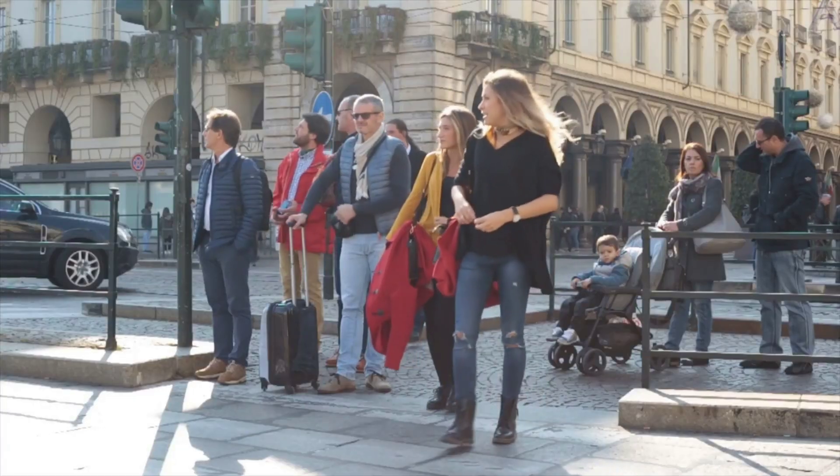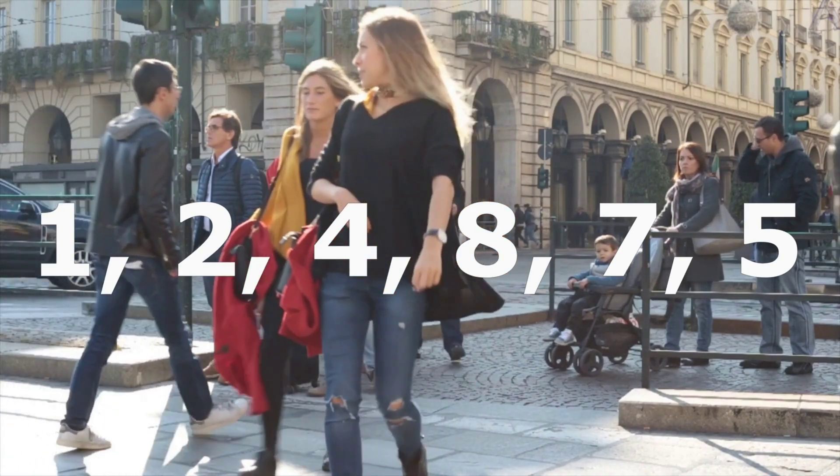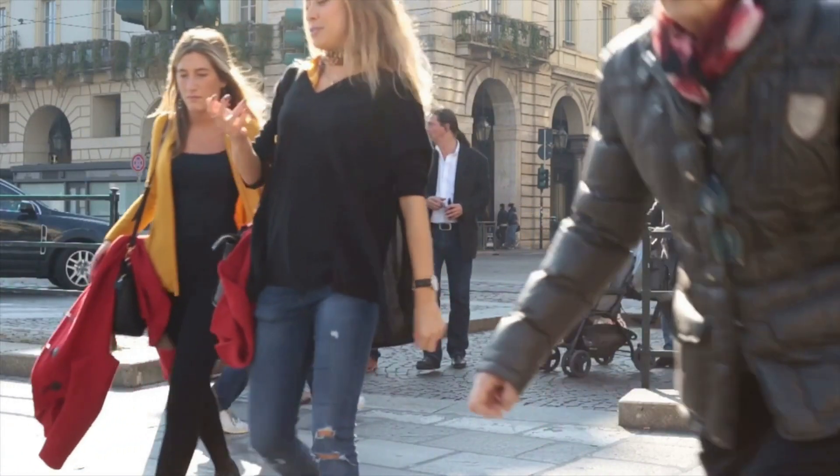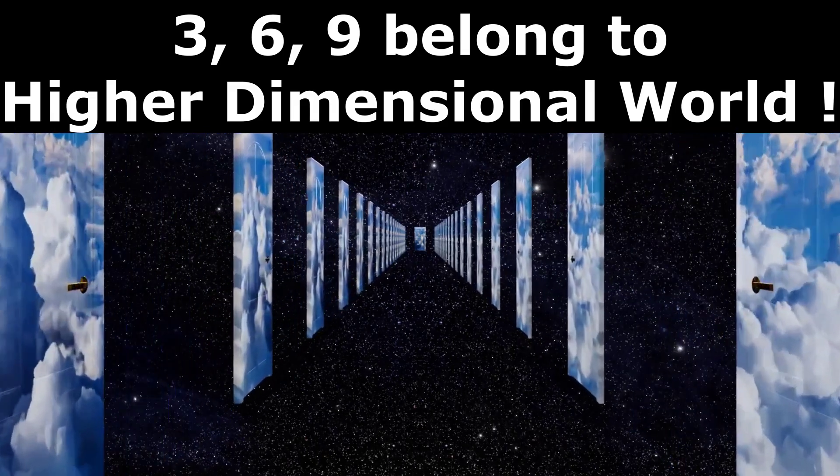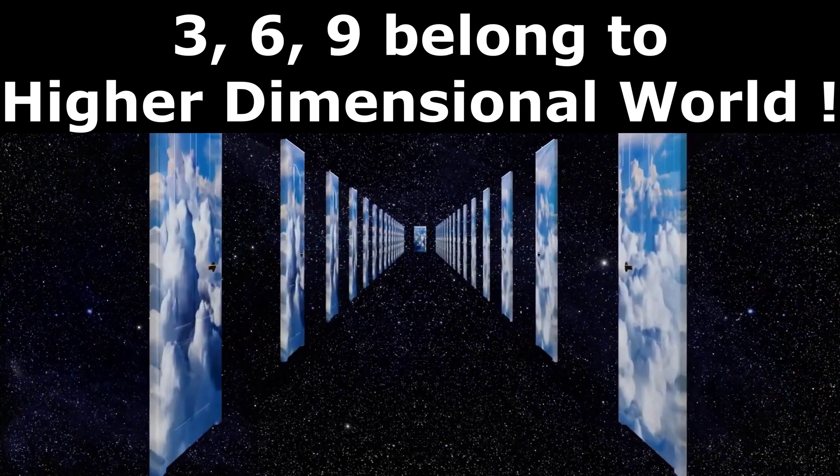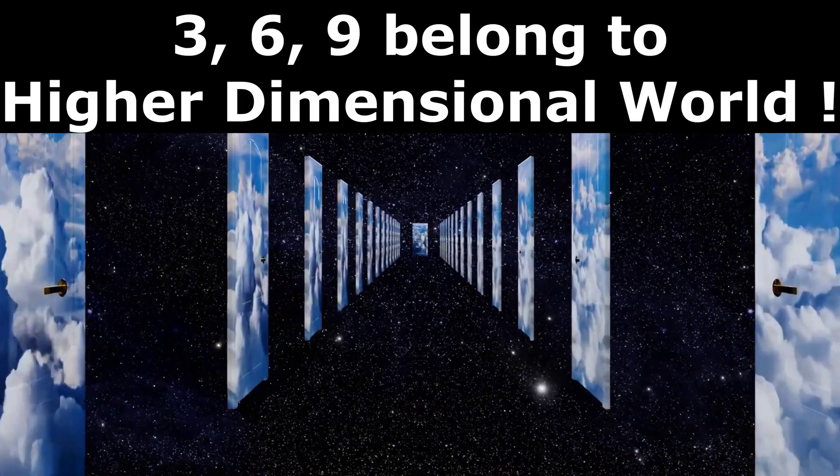According to some researchers, numbers 1, 2, 4, 8, 7 and 5 represent our 3D world where we live in, and the absence of numbers 3, 6 and 9 in the sequence means these numbers belong to higher dimensional world.